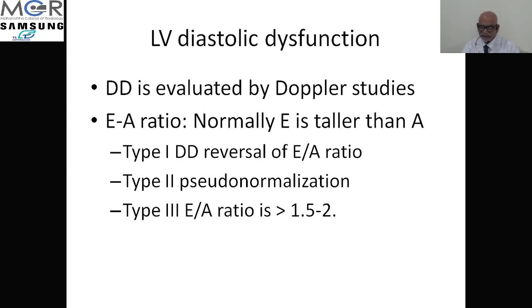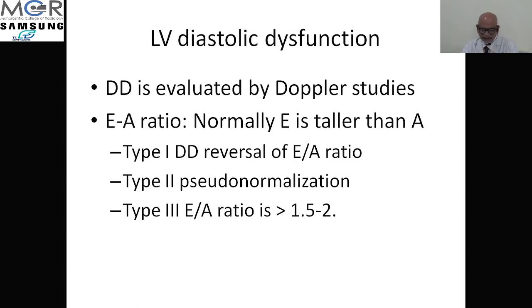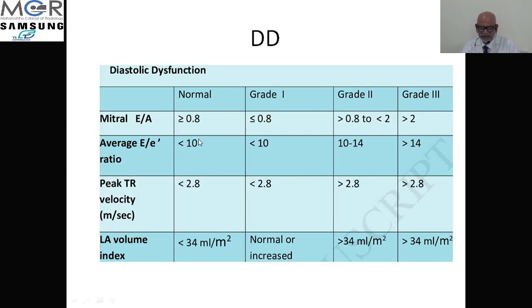Type 2 is called pseudo-normalization, where the left atrial size and pressure increase beyond the ventricular pressure, so the E/A ratio is restored back to apparently normal — but this is a worsening from Type 1. The E/A ratio will appear normal but the left atrium is enlarged. Type 3 is where the E/A ratio is more than 1.5 to 2 — in our case it was approximately 1.99, almost 2 — with a dilated left atrium; this is called Type 3 diastolic dysfunction.